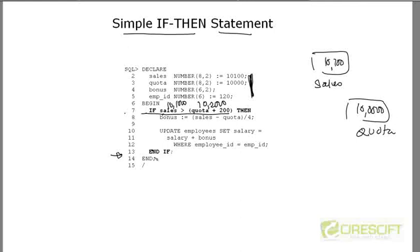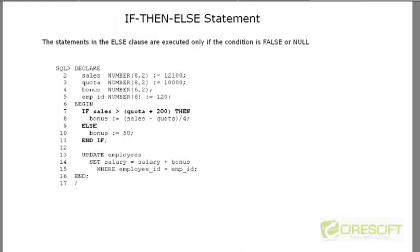So the idea of IF-THEN is: if something, then do it, then end. These are the syntax rules for PL/SQL: whenever you write IF, you need an expression that evaluates to a boolean value, then you write THEN. There is no comma or anything else. But for END IF, you need to give a semicolon.